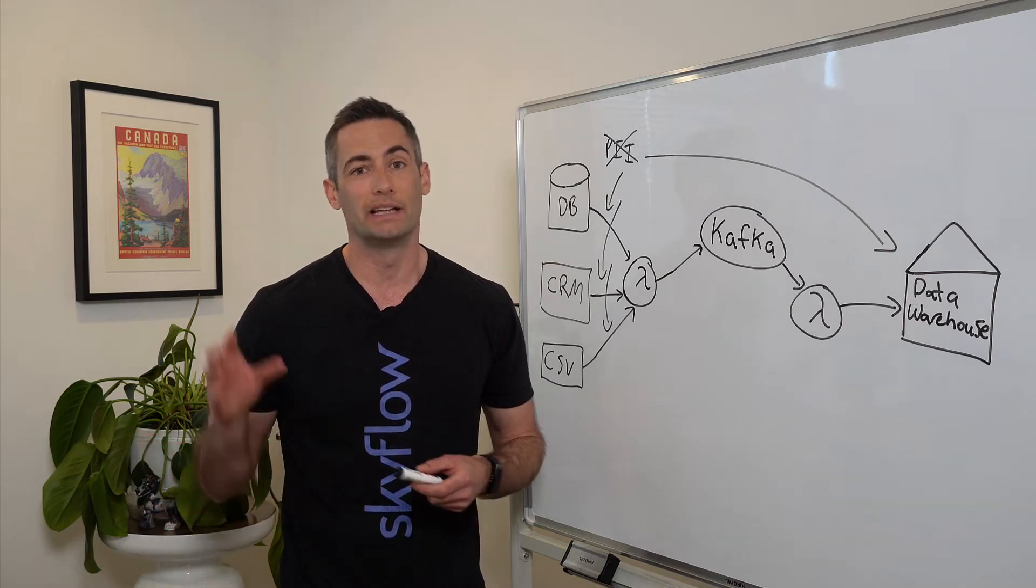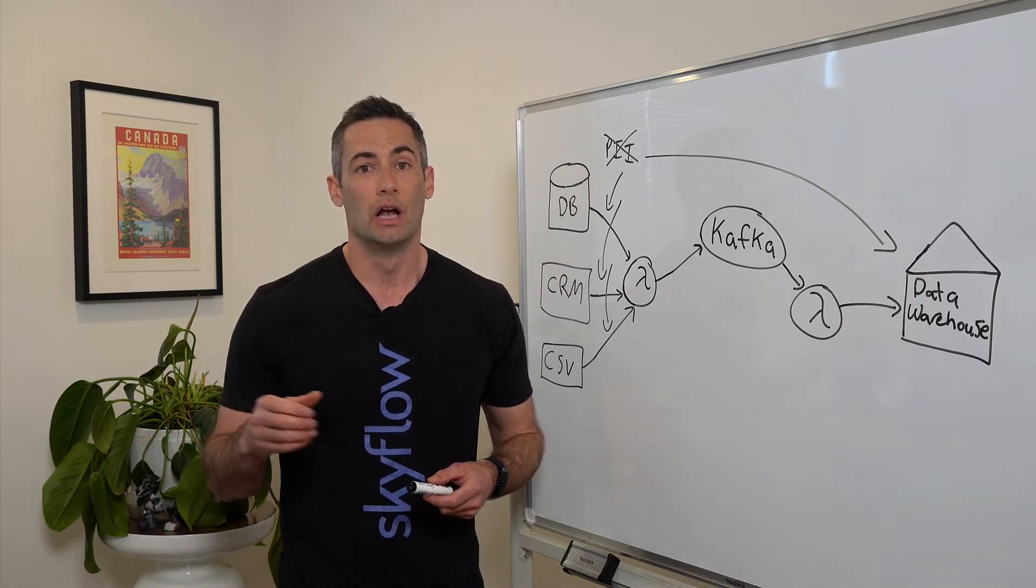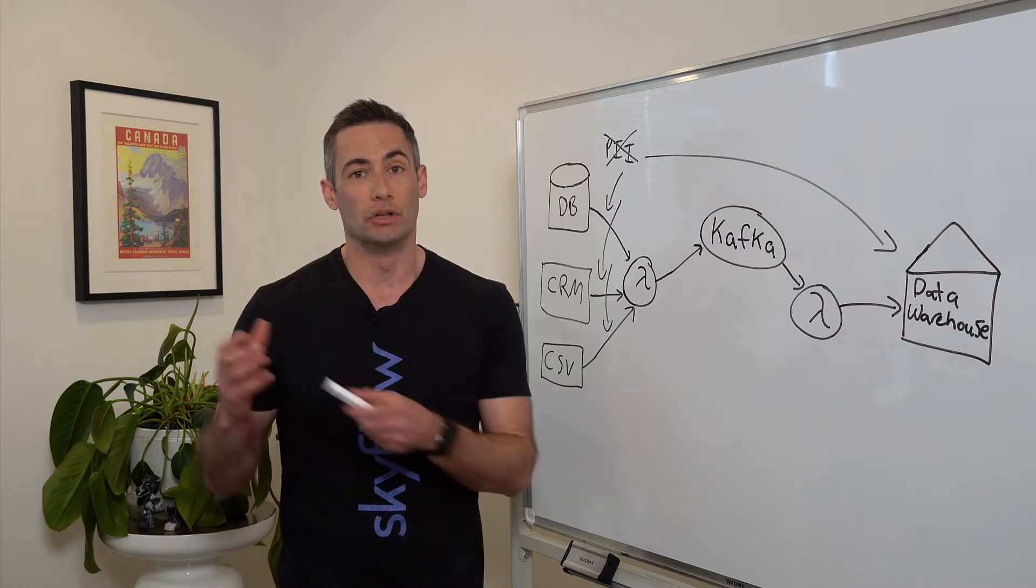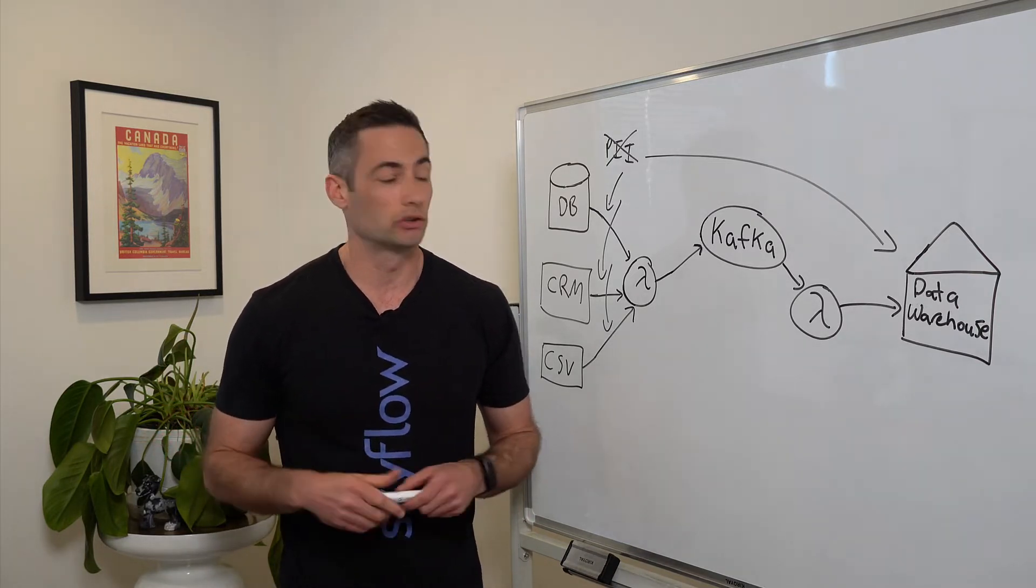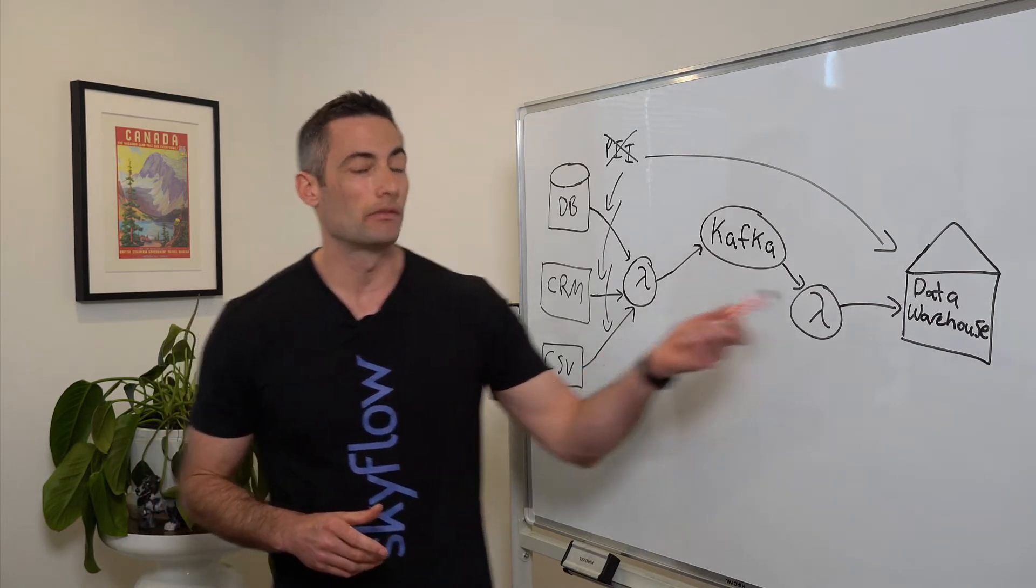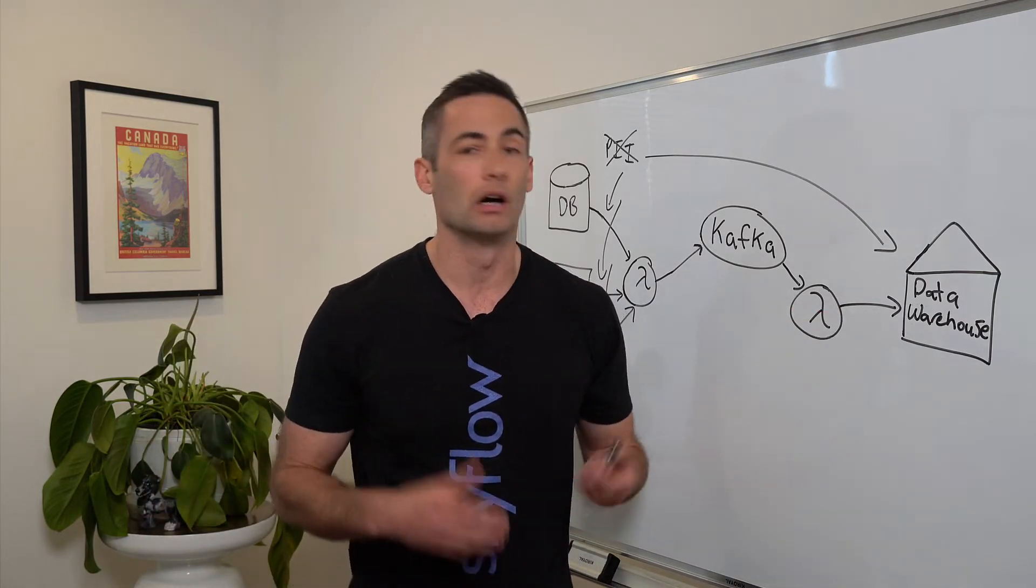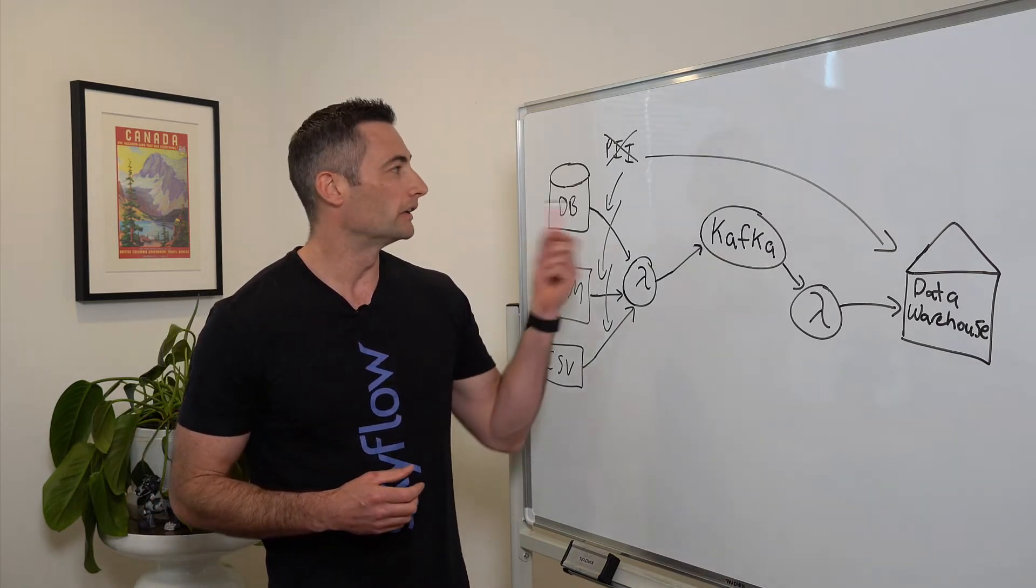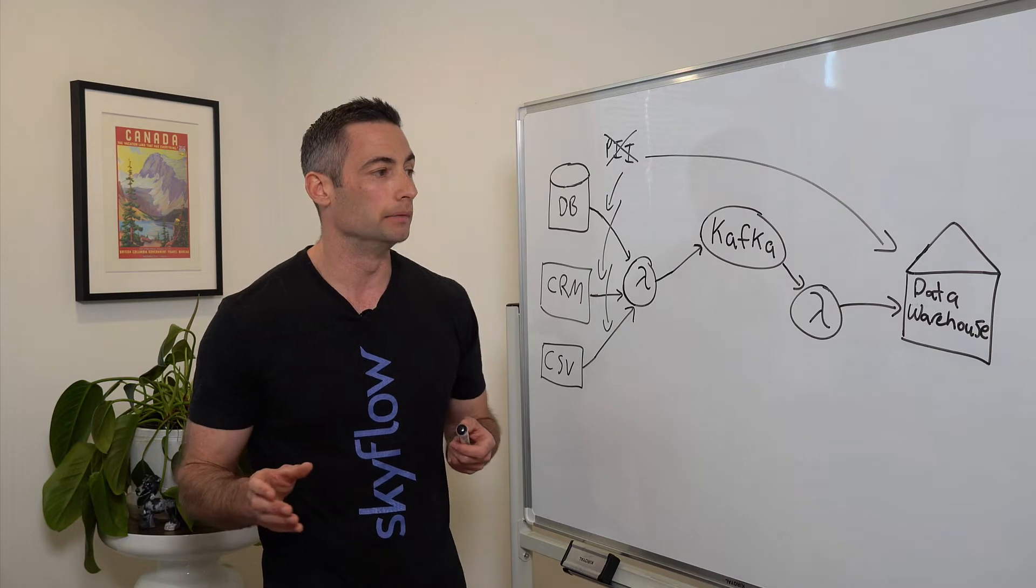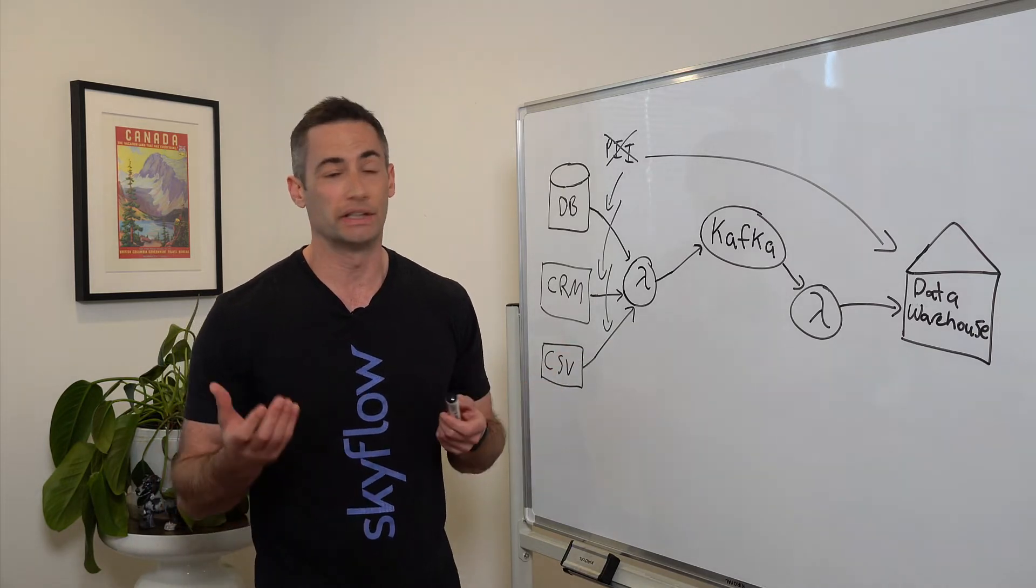For example, you might have a customer success dashboard that identifies customers that are at risk of canceling their service. And then maybe your customer success people reach out to those customers to try to rescue the account. Well, if you don't have a way of identifying who those customers are, you've kind of lost the utility of the data that you're collecting. So it doesn't make sense to completely remove the PII.